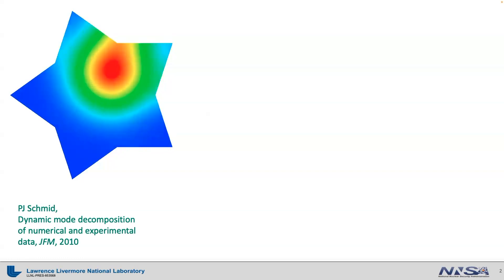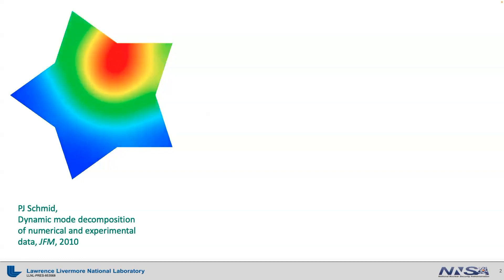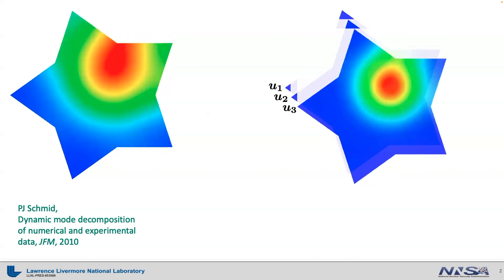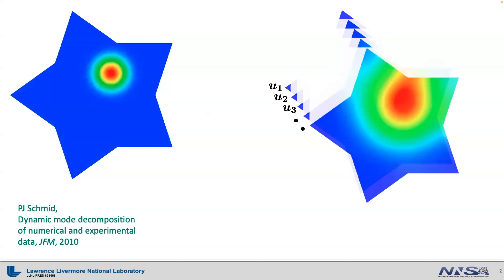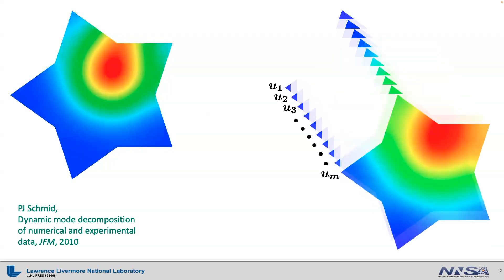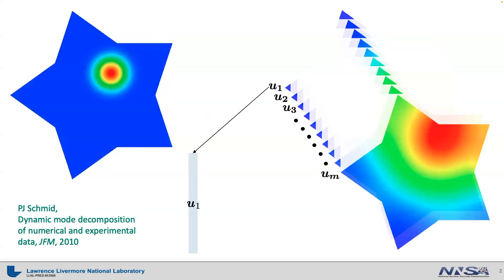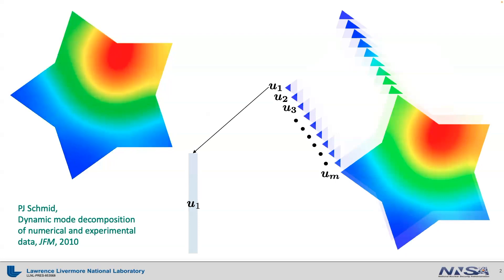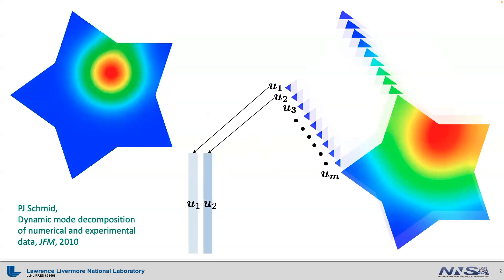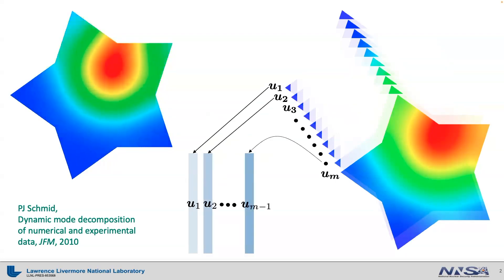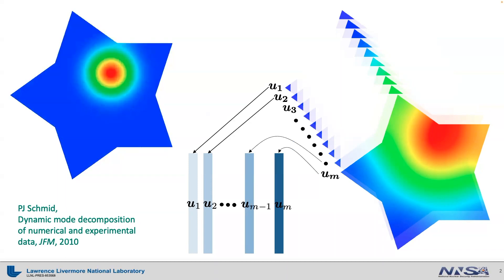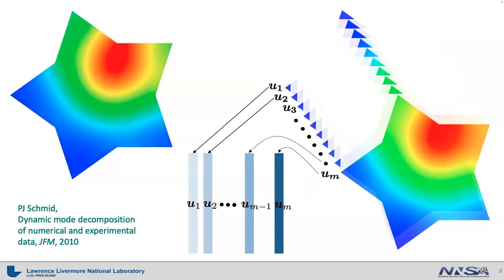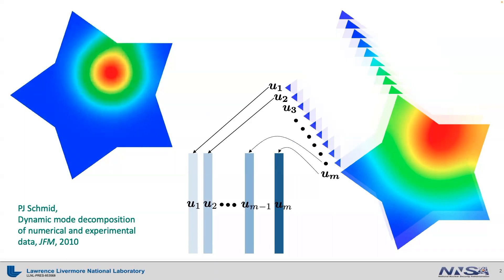DMD first takes each snapshot image data one by one, starting from the first time step to the second, third, and so on until the last time step. Then you vectorize each time step image data, starting from the first time step image to the second, and so on until the last time step. Each vector is called u1, u2, etc., up to um, which is the last time step vector.